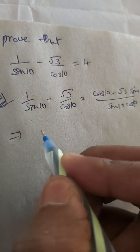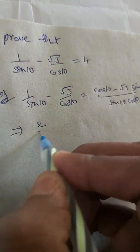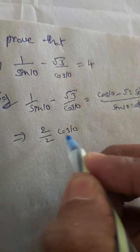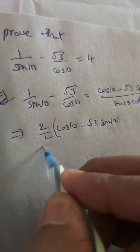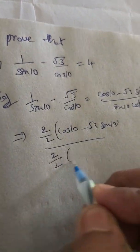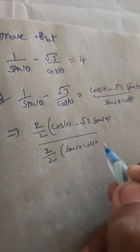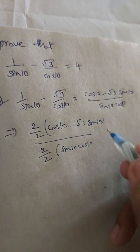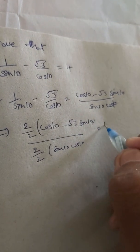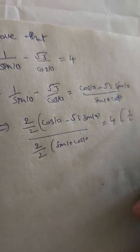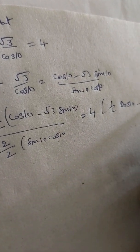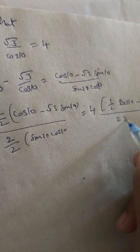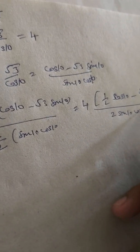Multiply numerator and denominator by 2: we get 2·cos(10°) minus √3·sin(10°) divided by 2, over 2·sin(10°)·cos(10°). That gives 1/2·cos(10°) minus √3/2·sin(10°) in the numerator, divided by 2·sin(10°)·cos(10°).